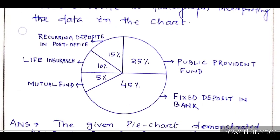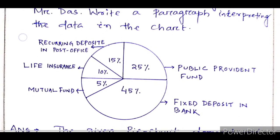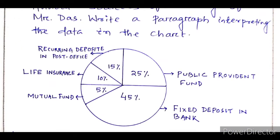His saving habits are shown in the chart — his sources are displayed there. So we need to look at this nonverbal figure and convert it into verbal form, into a paragraph with words. Before writing the answer, let us see what is there in the diagram and how he saves different amounts across different sources.